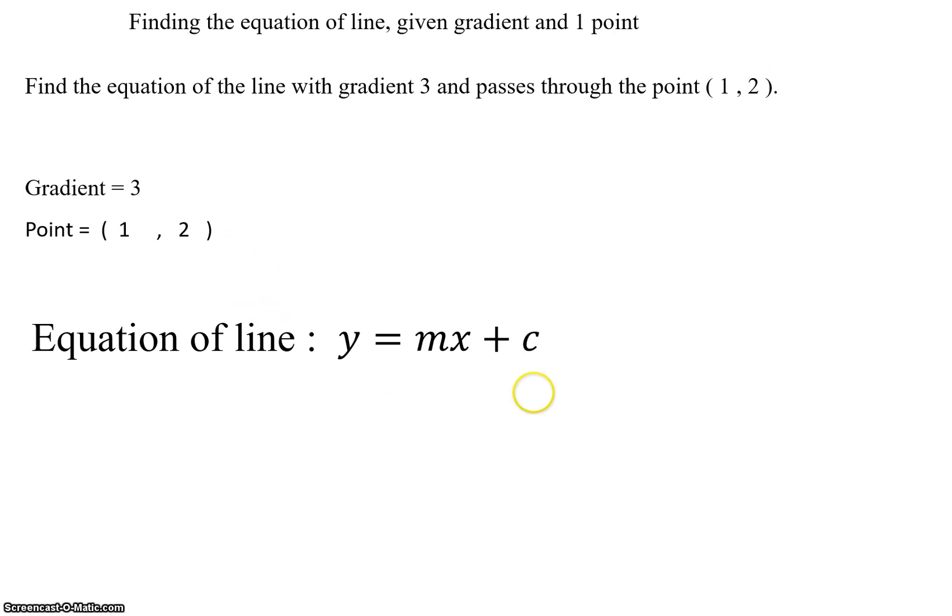I'm going to fit it into this equation. Now this is y = mx + c. This m actually over here is the gradient, so I'm going to change it to 3. So gradient 3. After that you notice that the whole equation is almost done. I'm left with one unknown called c.